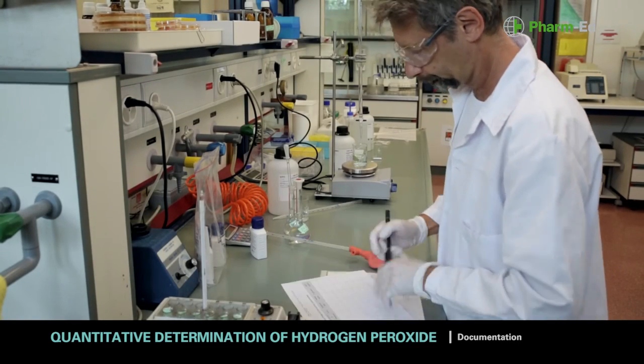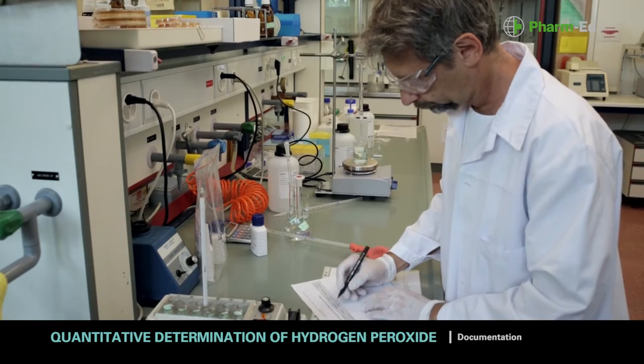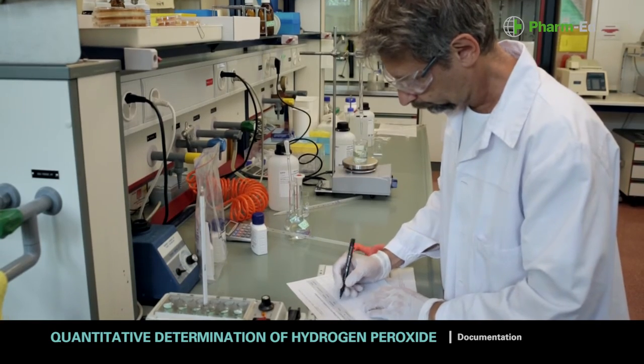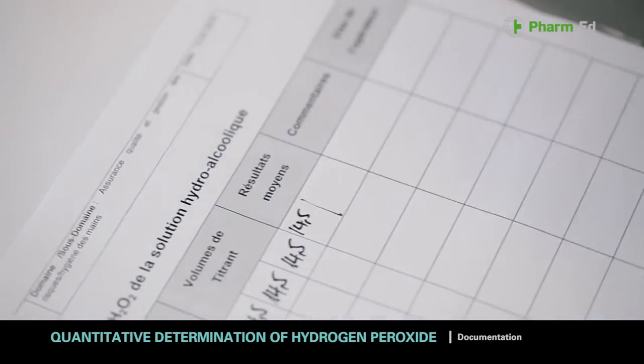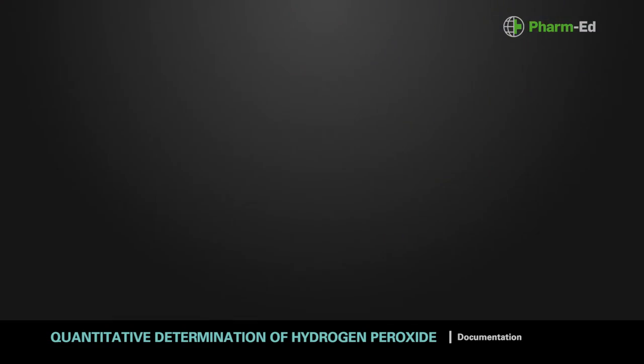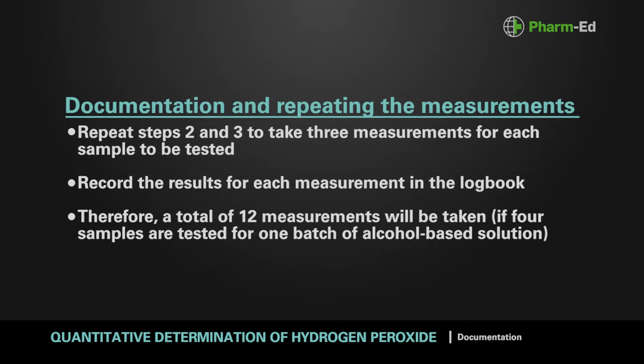Write the result in the logbook kept in the laboratory to ensure traceability. Repeat steps two and three in order to take three measurements for each sample to be tested. Record the results for each measurement in the logbook. A total of 12 measurements will be taken if four samples are tested for one batch of alcohol-based solution.